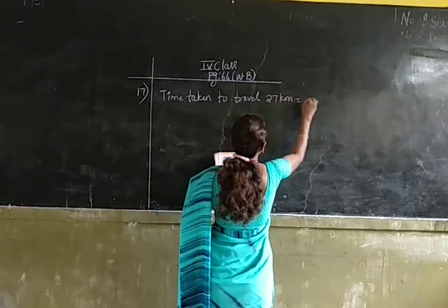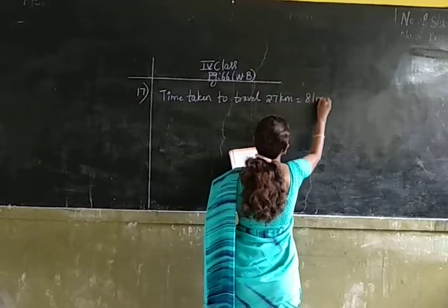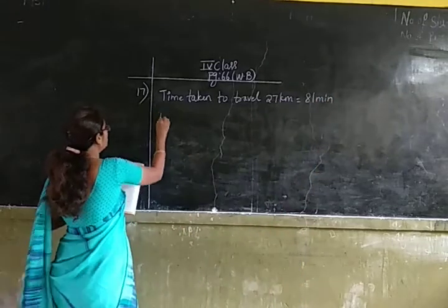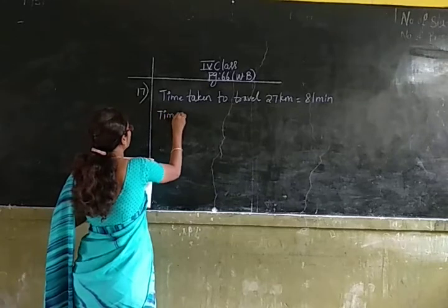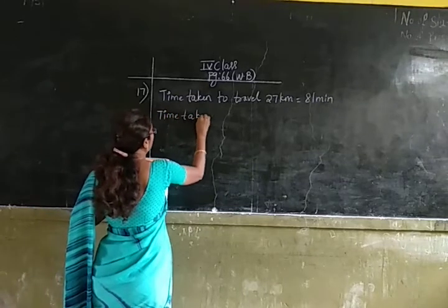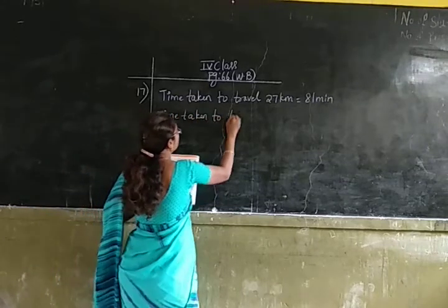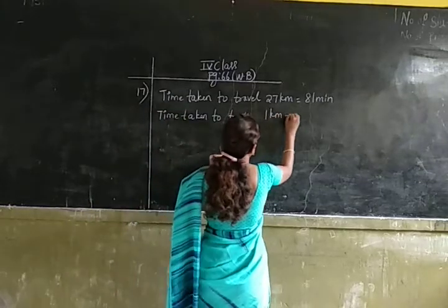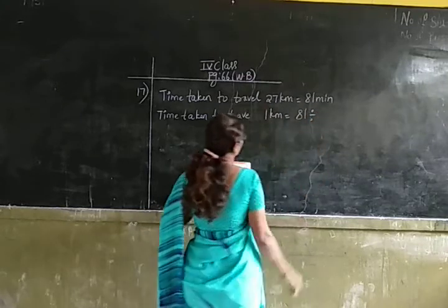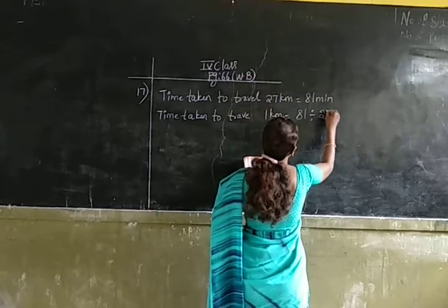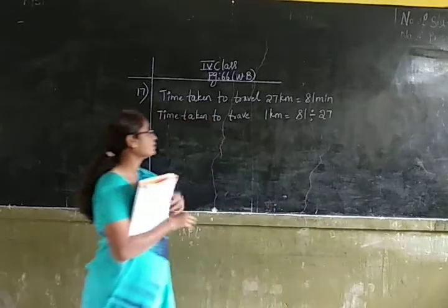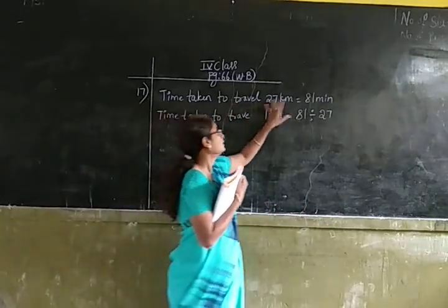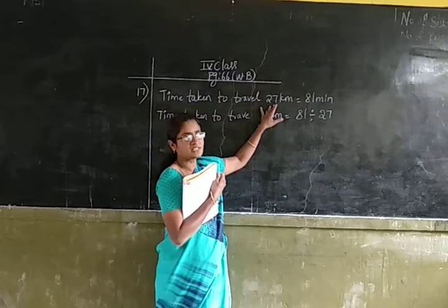The time taken to travel 27 kilometers is 81 minutes. Now we have to find out the time taken to travel 1 kilometer. The vehicle takes 81 minutes to travel 27 kilometers.